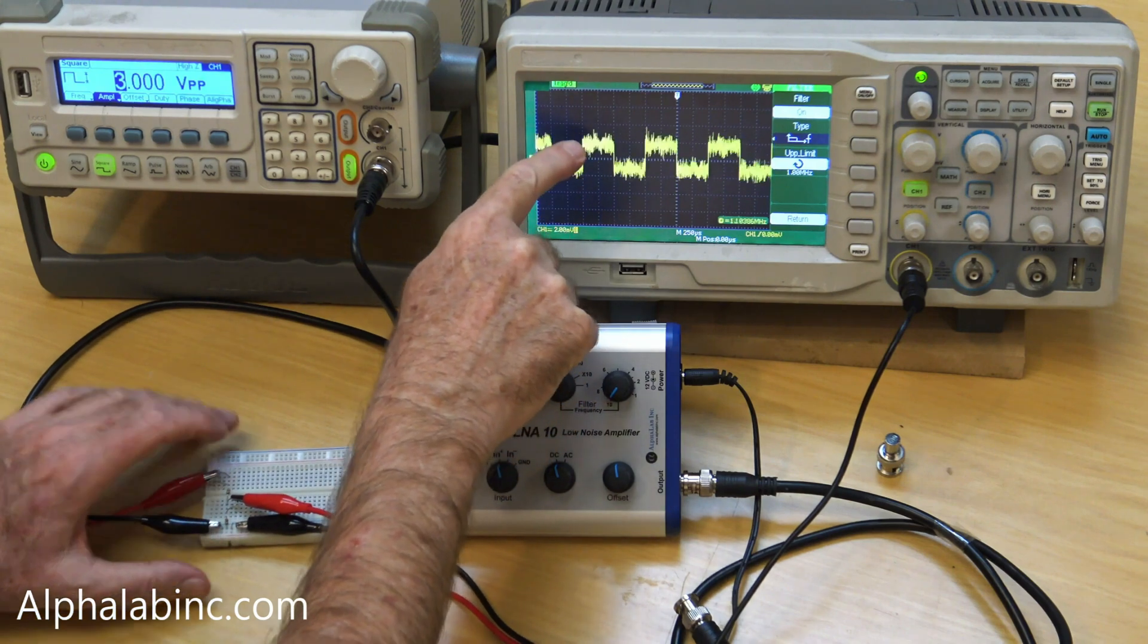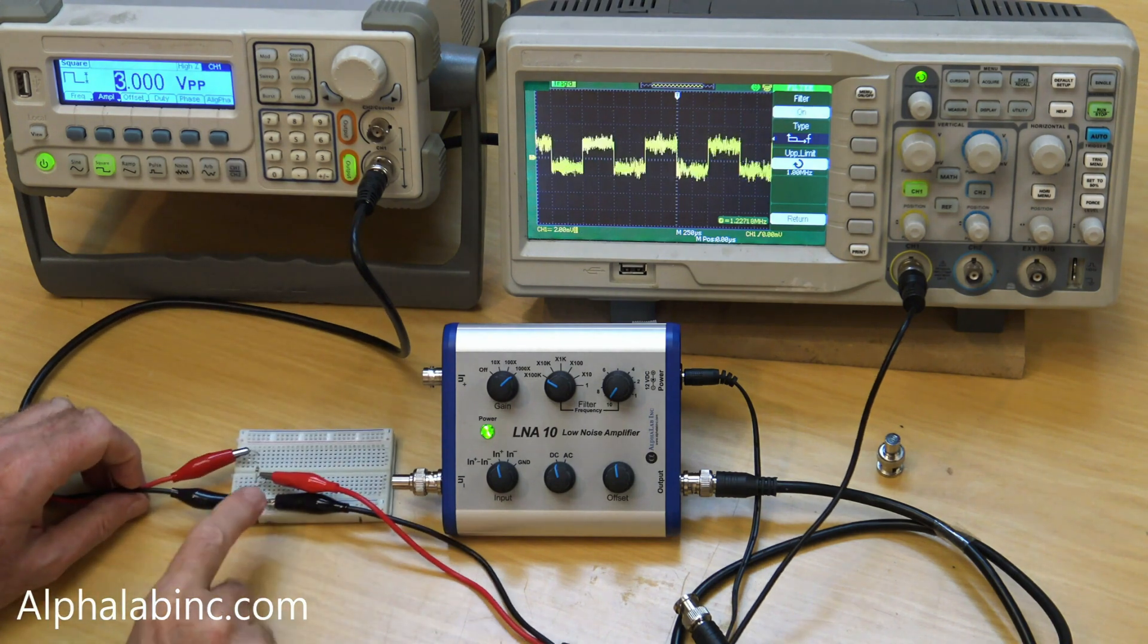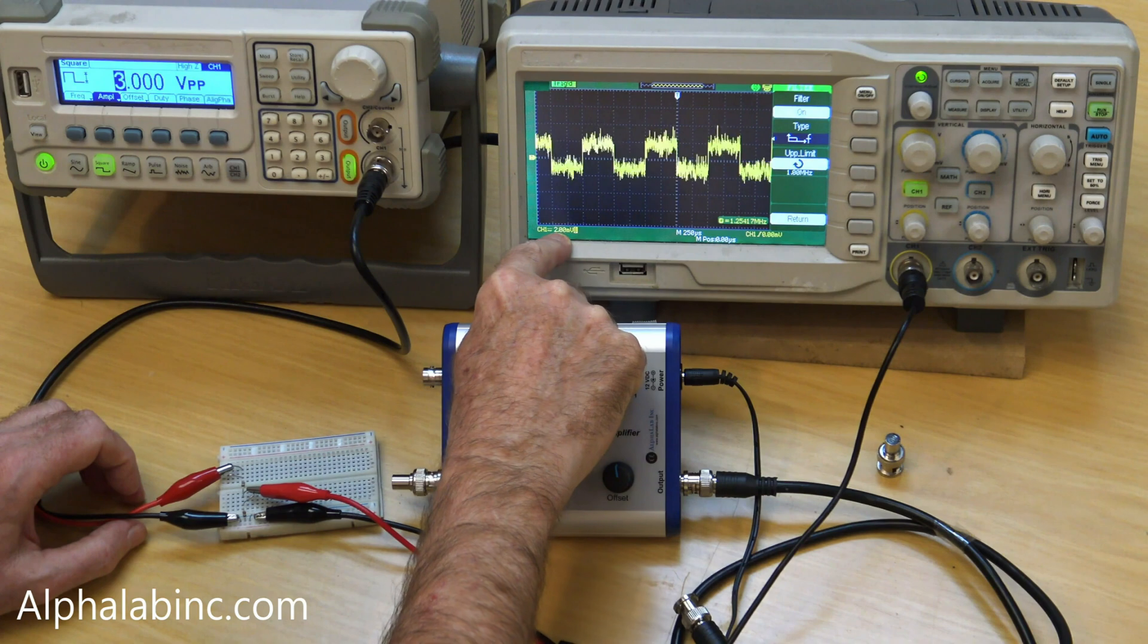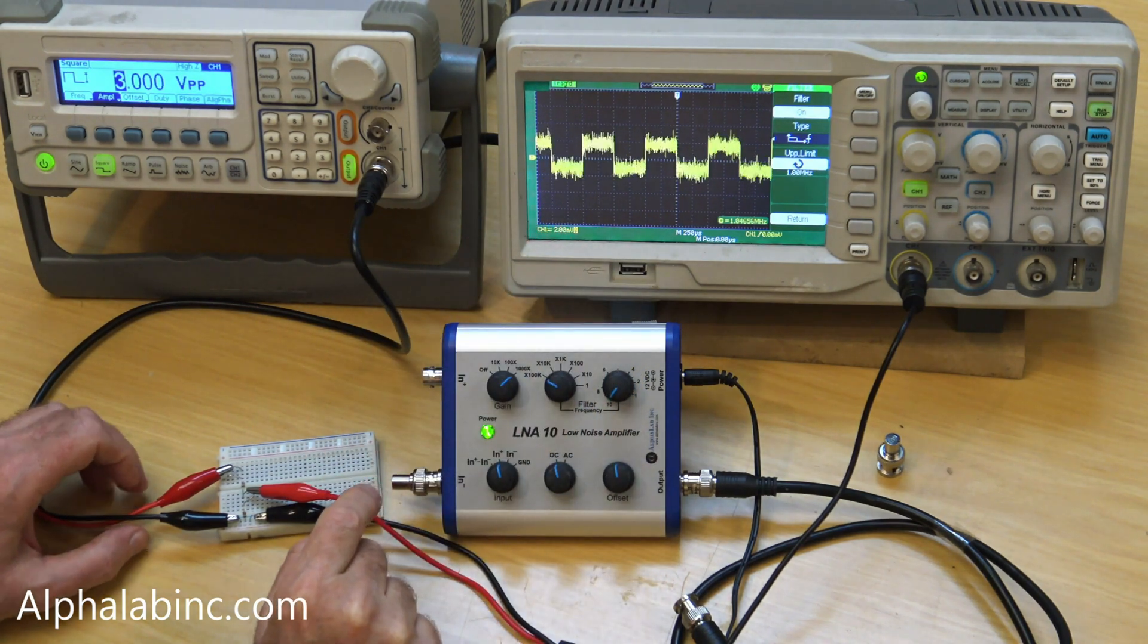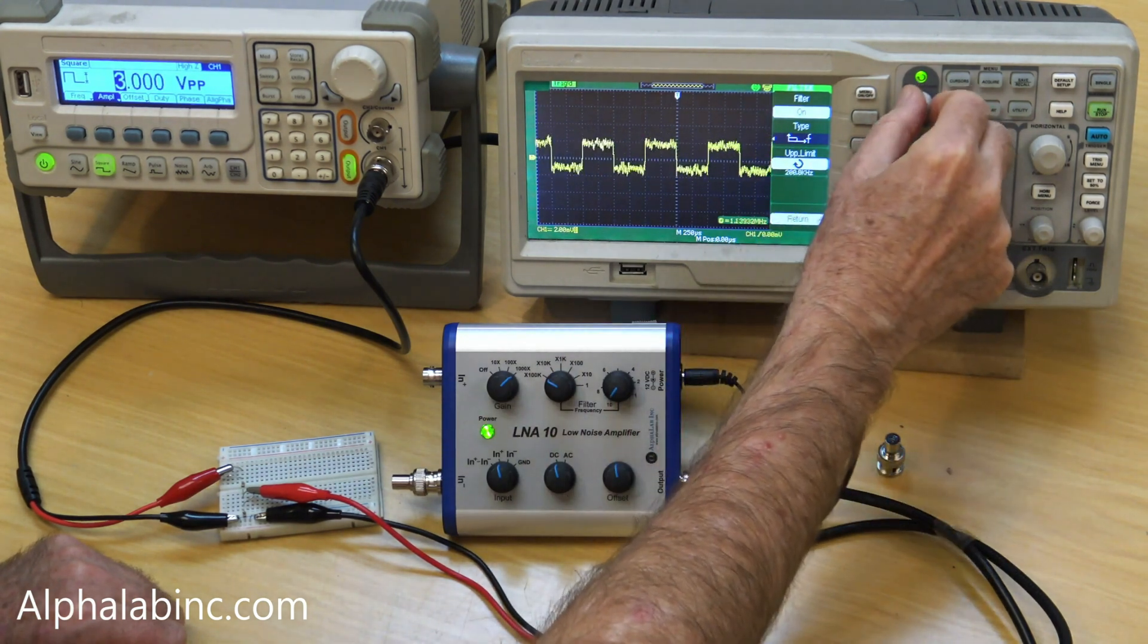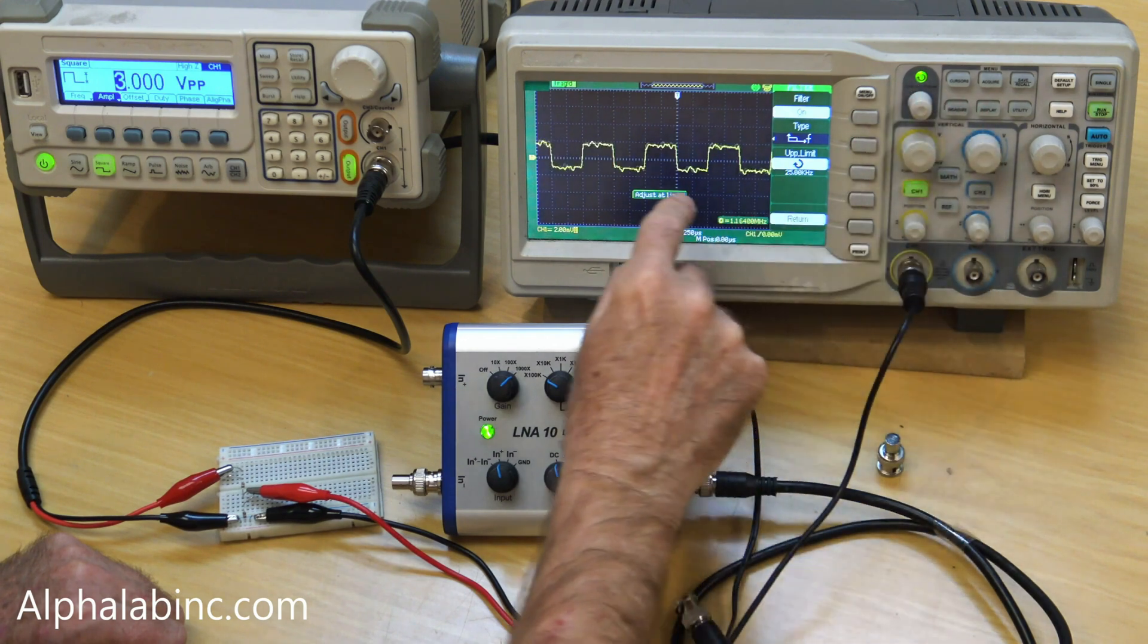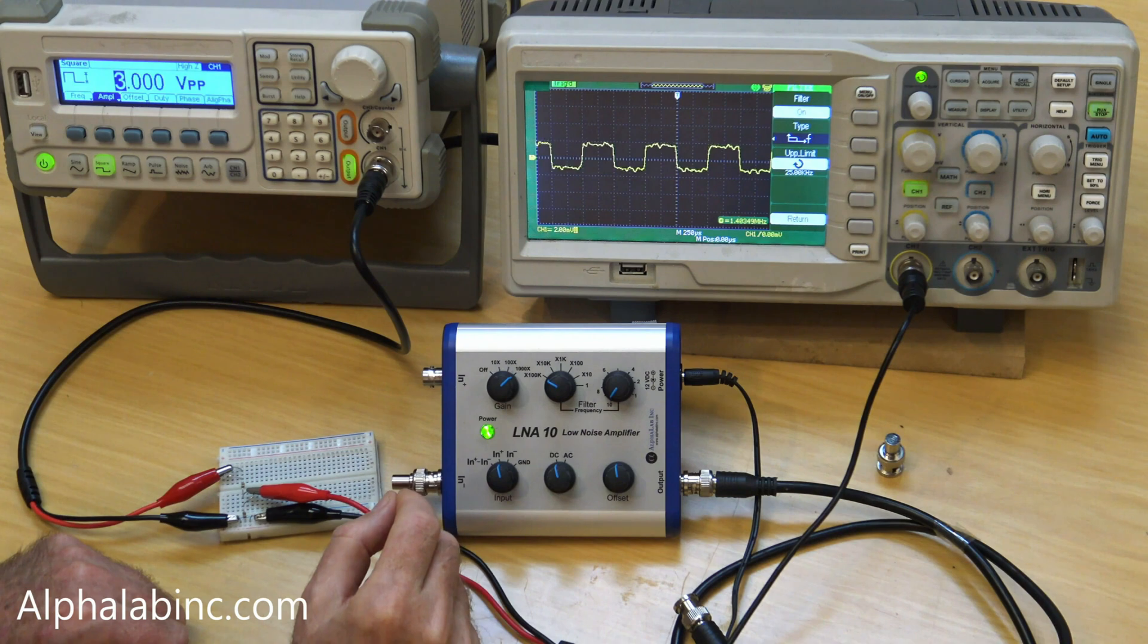As you can see, it's quite noisy. We have 3 millivolts peak to peak, which is 3 volts divided by 1000, with a scope gain of 2 millivolts per division. The noise looks like around a millivolt, but it can be reduced by reducing the bandwidth, for example down to 25 kilohertz. The noise still seems to be several hundred microvolts, even with this limited bandwidth.